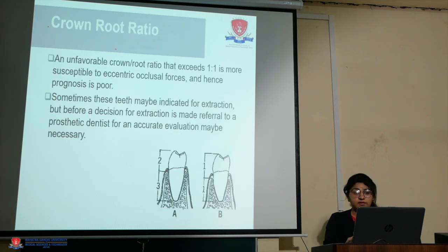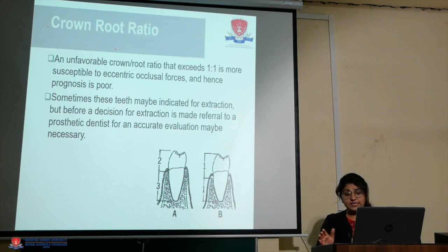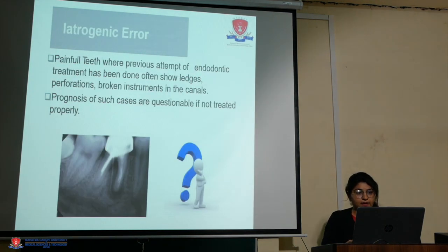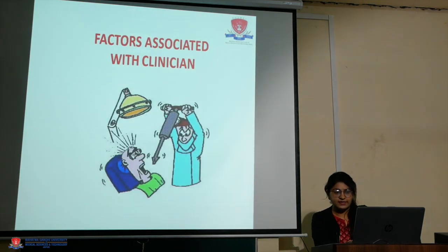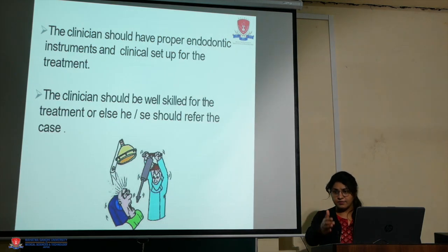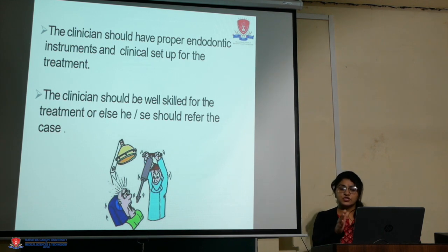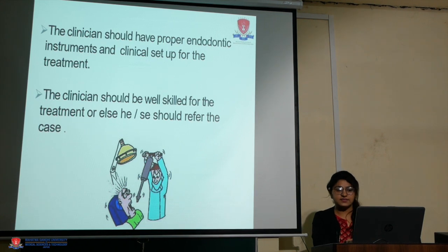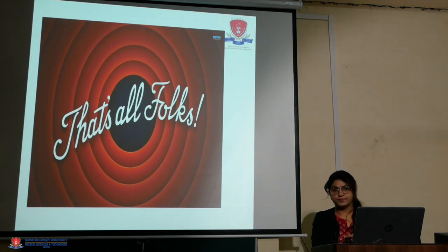Crown-root ratio is also important — an unfavorable ratio exceeding one-to-one is more susceptible to eccentric occlusal forces. The ideal ratio is two-to-three; if it is one-to-one or less favorable, you should not proceed. Iatrogenic errors such as instrument separation, ledging, and perforation must also be kept in mind. Finally, regarding factors associated with the clinician: you should have the best skills, armamentarium, and setup, and be prepared for emergencies. These are the factors that help determine case selection and guide optimal treatment planning.